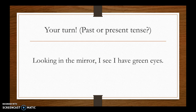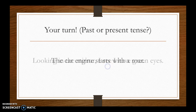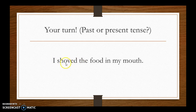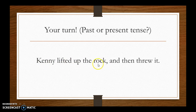'Looking in the mirror, I see I have green eyes' — this is present tense. 'Looking,' not 'looked'; 'I see,' not 'I saw.' Present tense. That's not something you'd generally write in a narrative, since you are writing about a story that happened in the past. 'The car engine starts with a roar' — look for the verb: 'starts,' not 'started.' That is present tense again. 'I shoved the food in my mouth' — 'shoved' is past tense; that happened in the past. 'Kenny lifted up the rock and then threw it' — 'lifted' and 'threw' are both past tense. One important thing: be consistent. If you are going to use past tense, use past tense all the way through, or you are really going to confuse your reader.